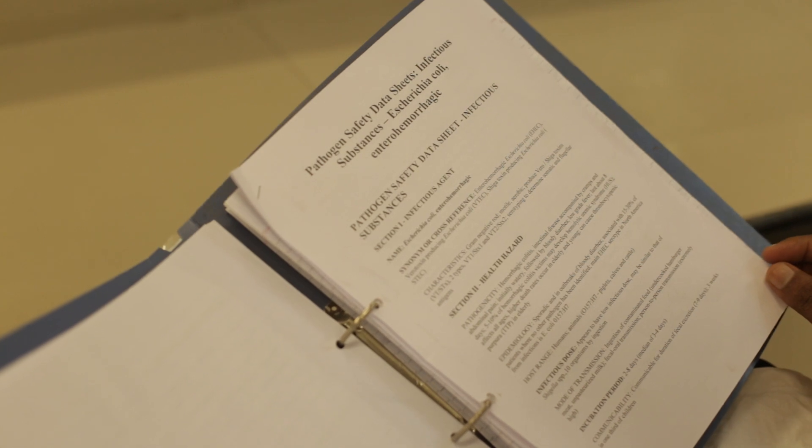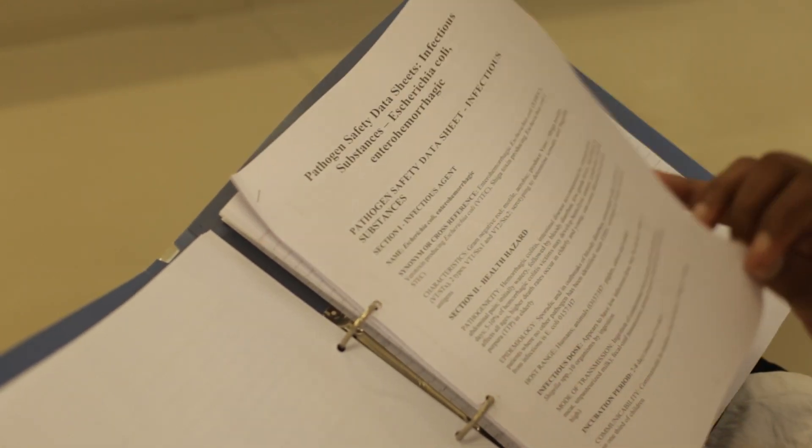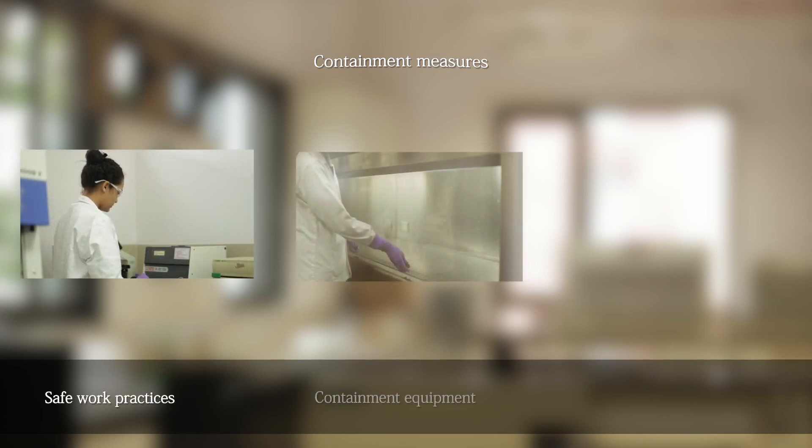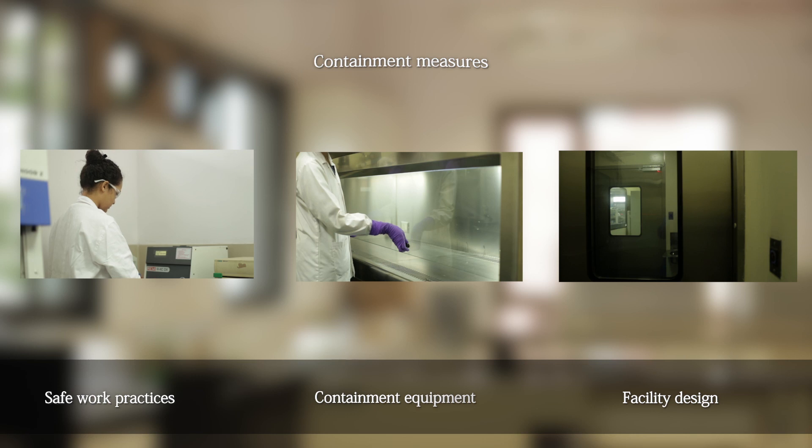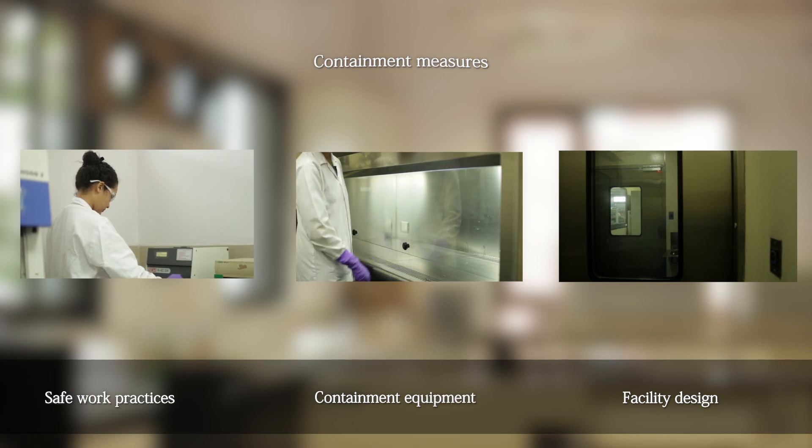You must know the modes of entry and related hazards of the pathogen before you start working with it. Containment of bio-risks can be achieved by safe work practices, containment equipment, and facility design. Depending on the risk level of the pathogen and other related hazards, facilities dealing with bio-research work are classified into the following biosafety levels: BSL1, BSL2, BSL3, and BSL4. The containment measures increase from BSL1 to BSL4.